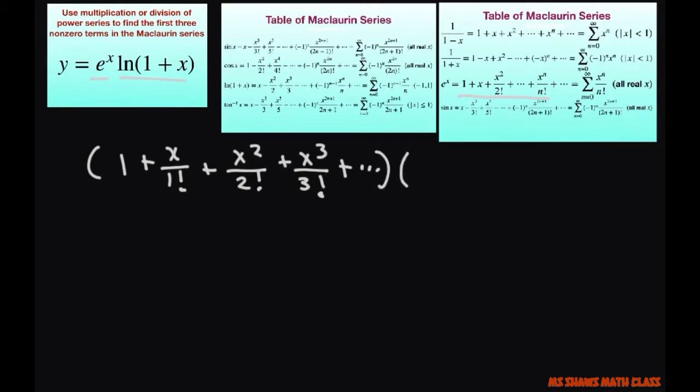And then for ln of 1 plus x, that's right there. So let's multiply that. That's going to be x minus x squared divided by 2 plus x cubed divided by 3 minus x to the power of 4 divided by 4 plus dot, dot, dot.